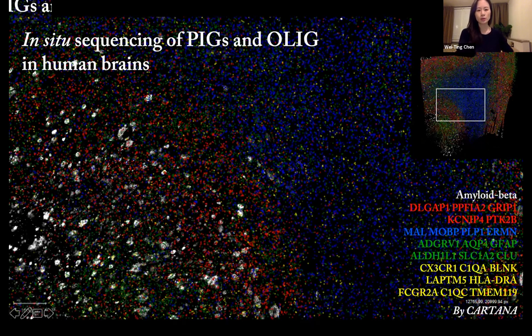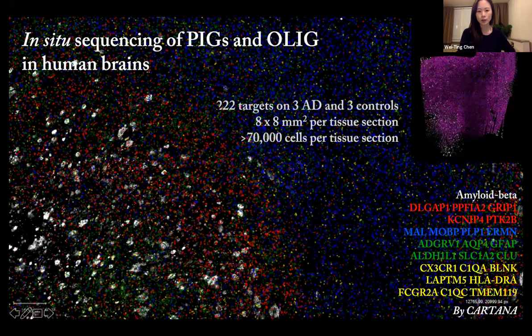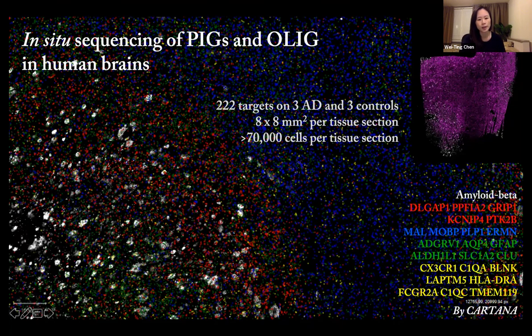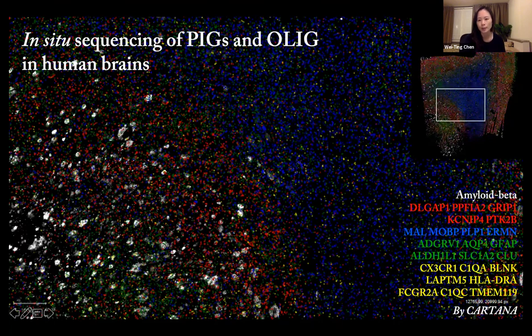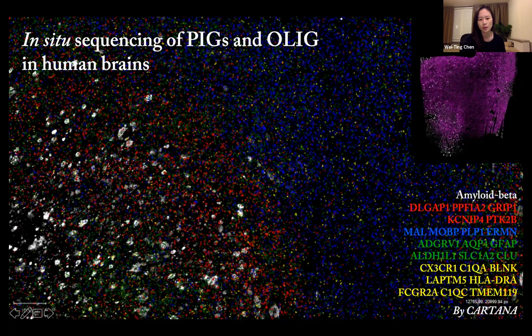We also do similar practice in human brain. Not only the PIGs, we also do in-situ sequencing for the oligodendrocyte network in the superior frontal gyrus of postmortem human brain tissue. Together we do 220 targets, three AD and three control. The image shows white amyloid plaque co-localized with red neurons, mostly in the gray matter. Blue is oligodendrocytes mostly in white matter. The purple image shows expression of our PIGs is co-localized with and more enriched in the plaque in the gray matter. For the oligodendrocyte network, during cell typing it's really purely from oligodendrocytes. That's why we name it as olig network.